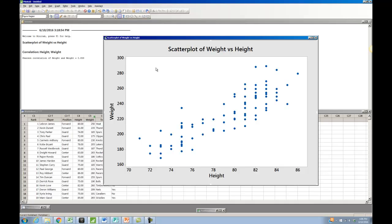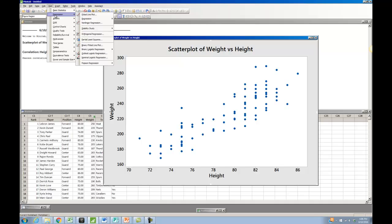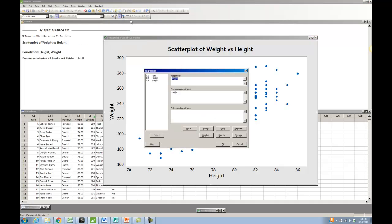So now I'm ready to take it to the next step, which is to look at the regression model. To do regression in Minitab, I come over to the stat menu, choose regression, then choose regression again, then choose fit regression model. I enter in my response, which is my y, so that's going to be weight. And then I'm going to enter in height for my x variable, that's the continuous predictors, and click on OK.